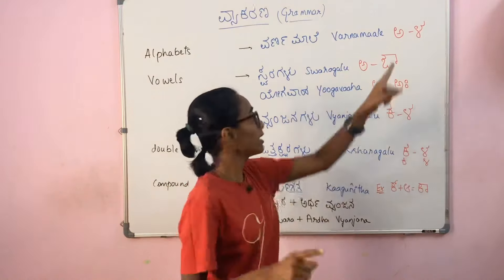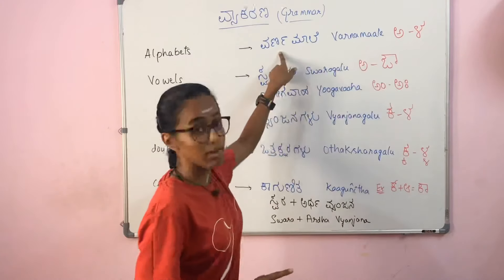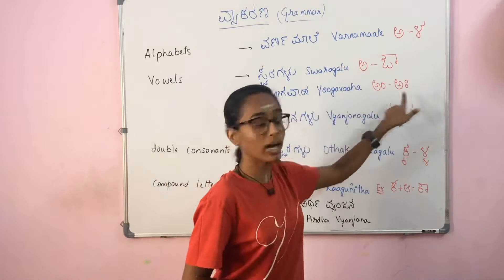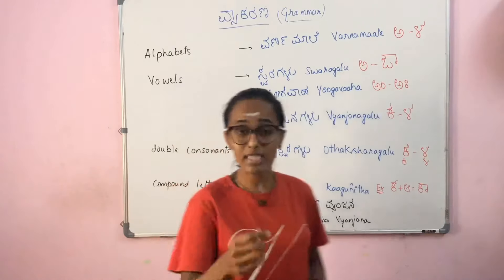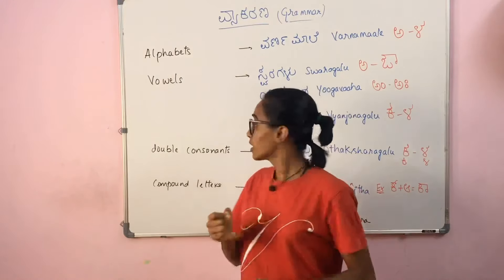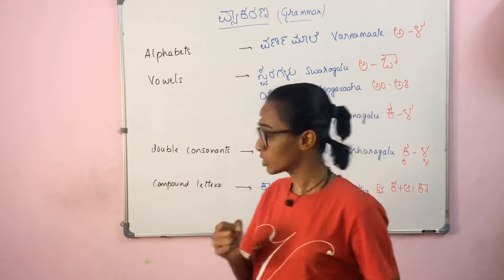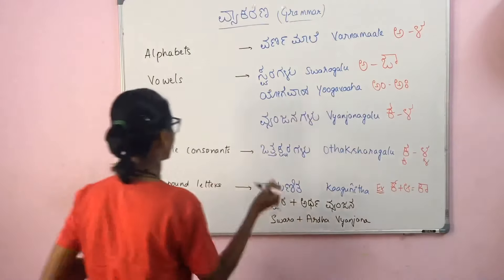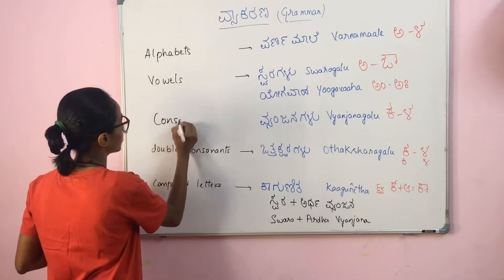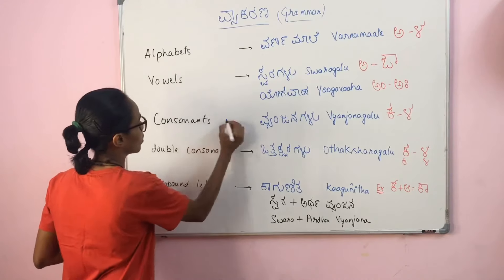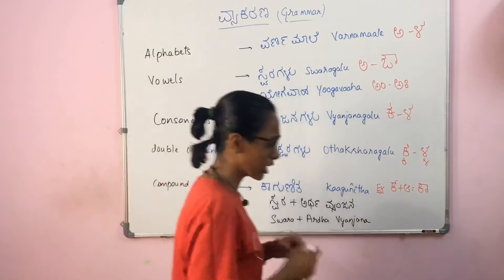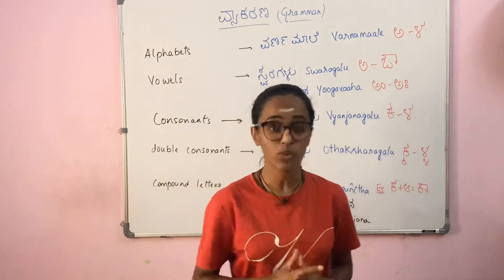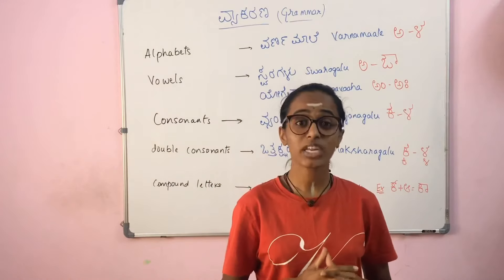So to summarize: varna maale is from a to la; svaragadu is from a to au; am and aha are yogavaha. Next are consonants — vyajanagadu. Consonants are called vyajanagadu.